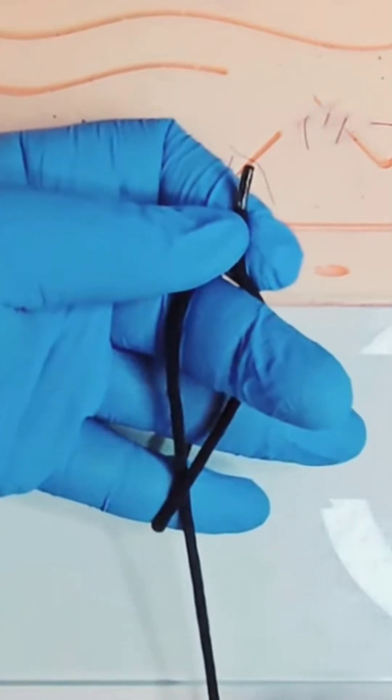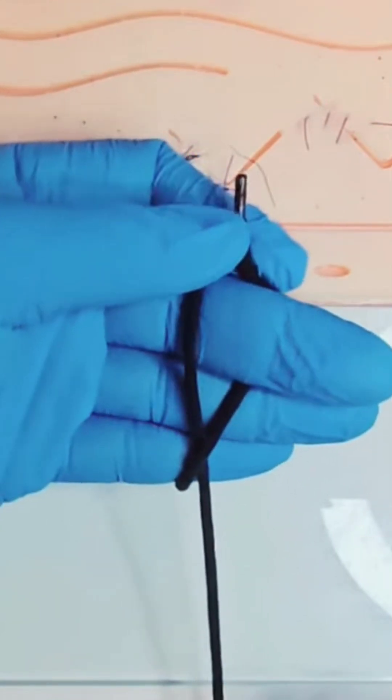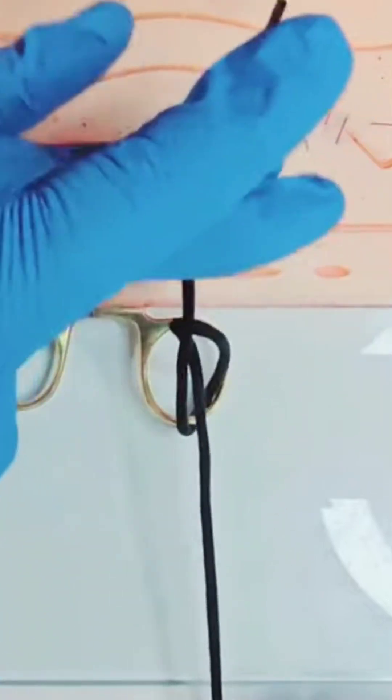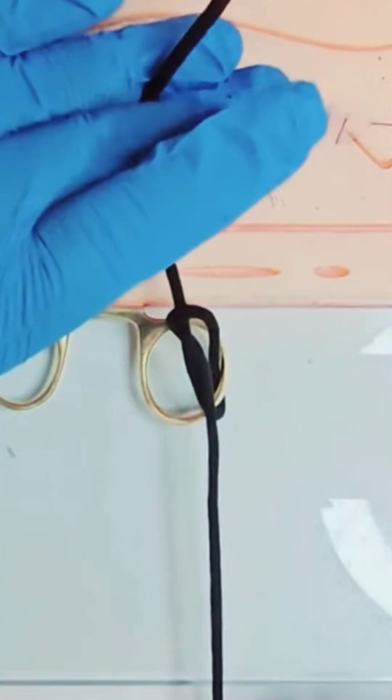Squeeze the short thread between middle and ring, release the pinch grip and pull the short thread away from you. Now tighten this knot.